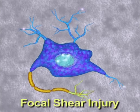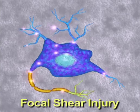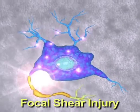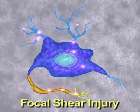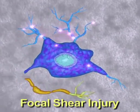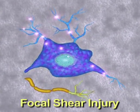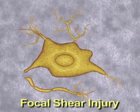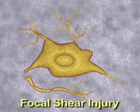In a focal shear injury, there is rupture of the axons around a particular area that has been injured, and this can continue to occur after the injury has happened.